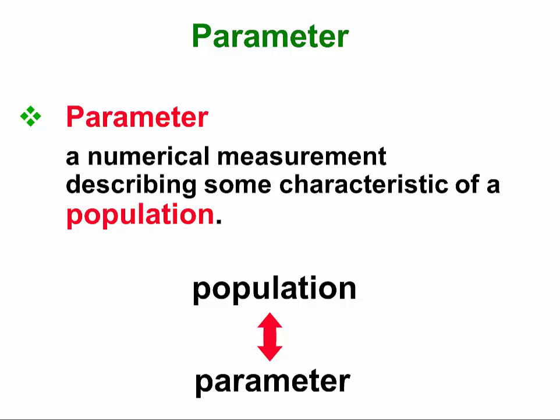One of the words that we use in statistics is the word parameter. A parameter is a numerical measurement that describes a characteristic of a population. Notice that the word parameter and the word population both start with the letter P.